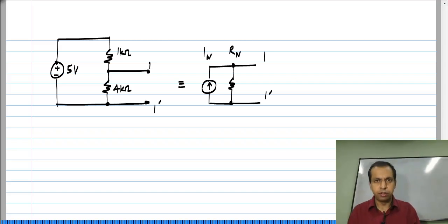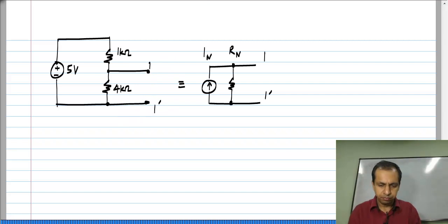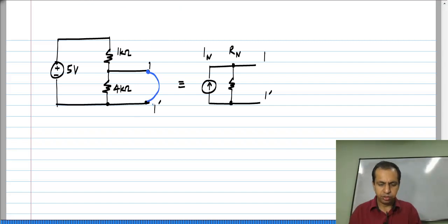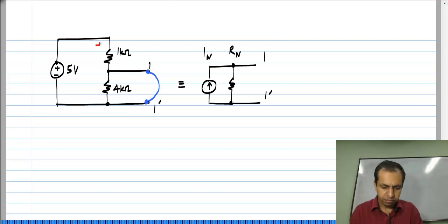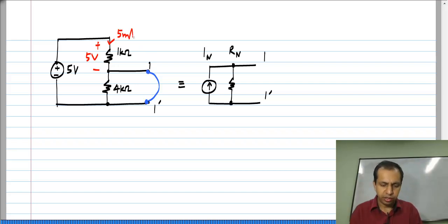To find the Norton current source, we have to short circuit these two terminals and find the current going through the short circuit. I will short circuit this, then you can clearly see that this 5 volt appears entirely across this 1 kilo ohm. So, 5 volts across 1 kilo ohm results in a current of 5 milliamps, and that goes through the short circuit.